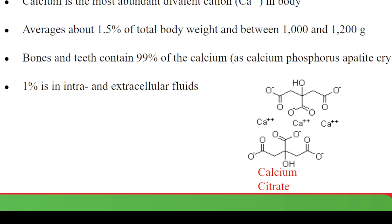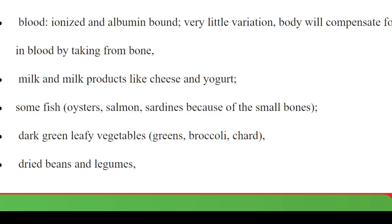Here is one of the structures of a calcium-containing compound: calcium citrate. As for sources of calcium, one is that calcium is found in blood in an ionized form and it is bound in blood to albumin, which is a carrier protein.